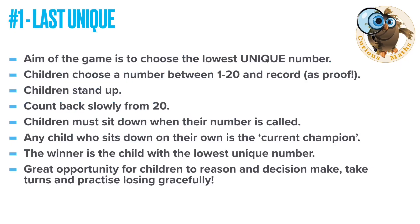Game one is Last Unique. The aim is to be the person who chooses the lowest but unique number. Children choose a number between one and twenty — make them record it as proof they're not cheating. Children stand up and you count back slowly from twenty; children must sit down when their number is called. For some numbers many children might sit down, but any child who sits down on their own is the current champion. Keep going until one child is left — that winner has the lowest unique number. It's really great for reasoning, problem solving, decision making, and learning from what you find out.